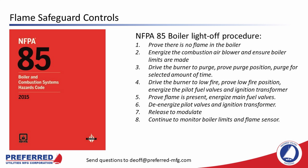Some modern flame safeguard controls include a function called early spark termination. The controller energizes the pilot valves and ignition transformer to light the pilot, then after five seconds de-energizes the ignition transformer and uses the flame scanner to ensure the flame is still lit without the ignition transformer. Ultraviolet scanners can sometimes see the igniter spark and not the pilot flame, which could cause the flame safeguard to open the main fuel valves without the pilot flame present — which could be dangerous. By terminating the spark early, the flame scanner can only be satisfied by a real pilot flame.